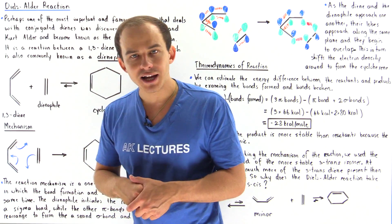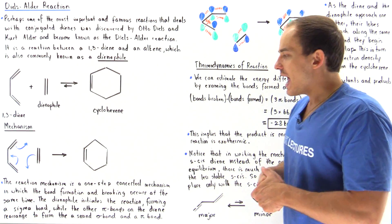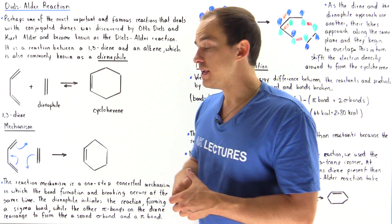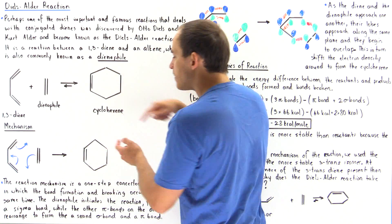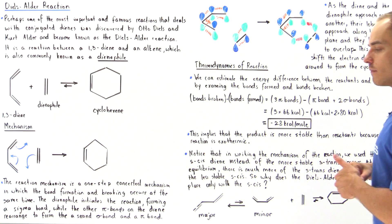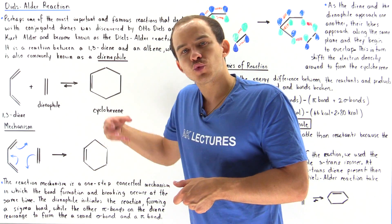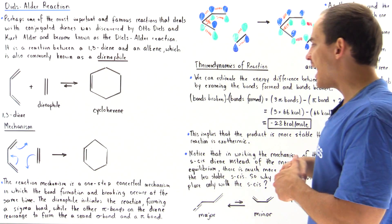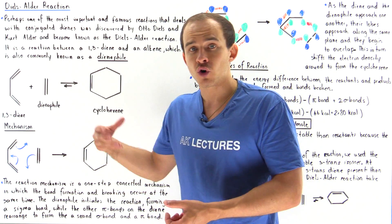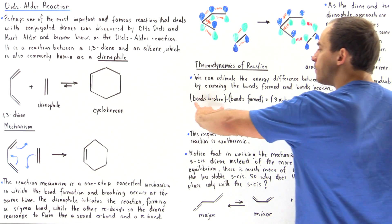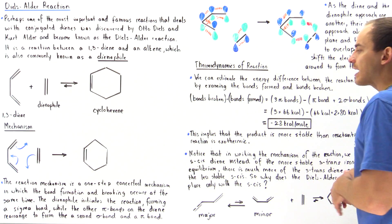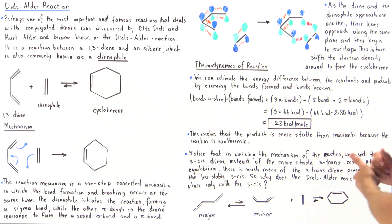and we have one pi bond being formed and two sigma bonds also being formed. To estimate how much energy is either released or gained in our reaction, that is to see if it's exothermic or endothermic, we take the bonds broken and subtract from the bonds being formed.